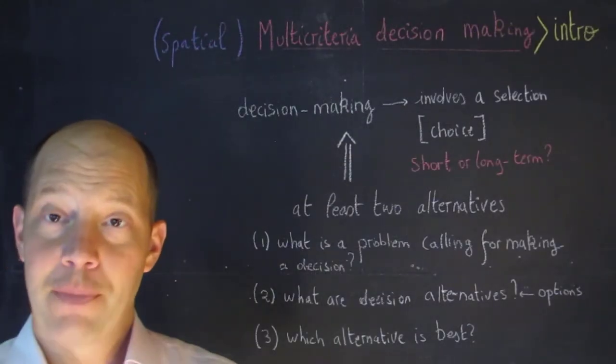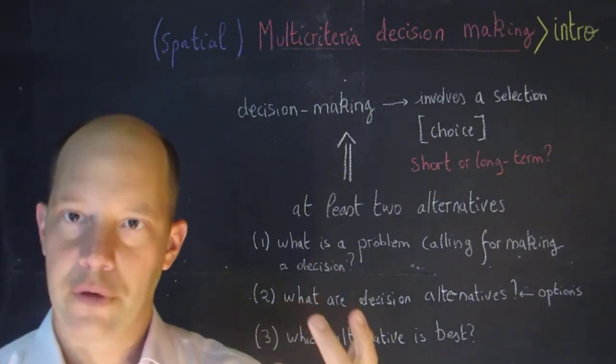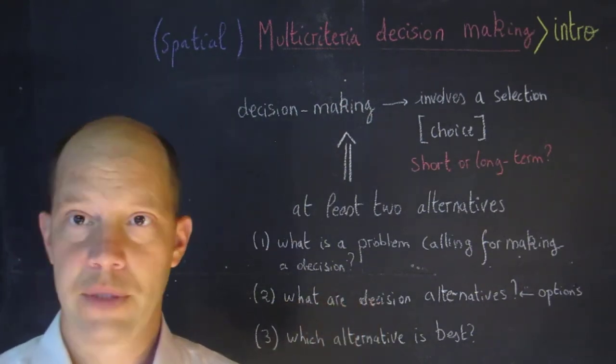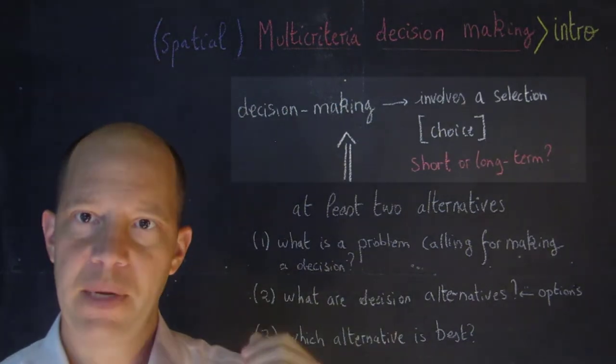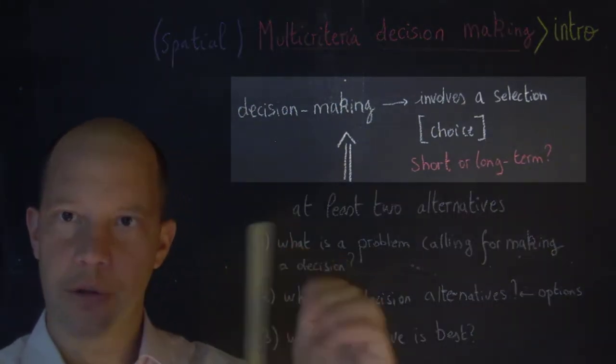The decision-making process is made of at least two different alternatives. Otherwise there is no decision that needs to be made.